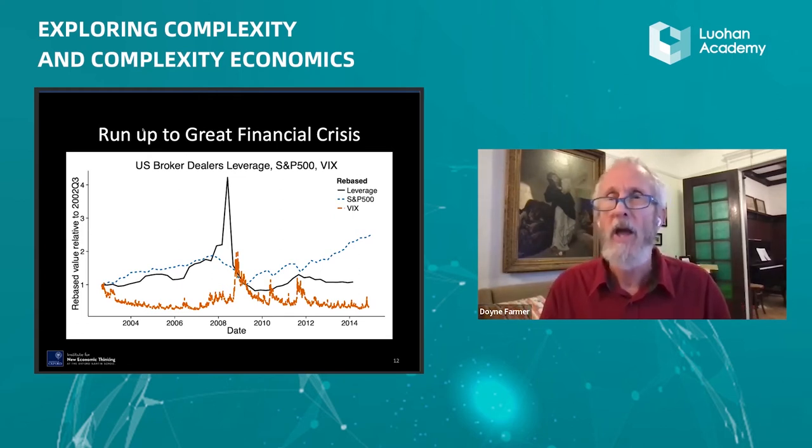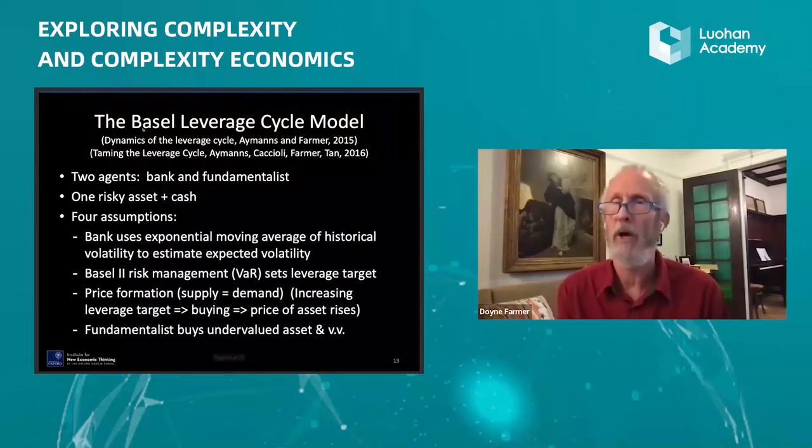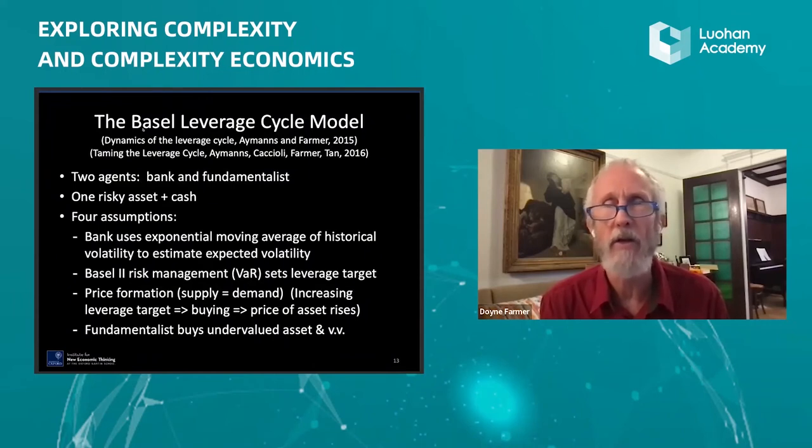And so we began stripping it down until we created the simplest thing we possibly could that captured what was going on. So that led to the two papers above, both led by Christoph Imens. In this model, we have two agents, a bank and a fundamentalist, one risky asset plus cash.